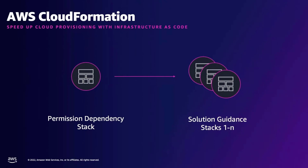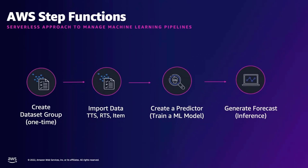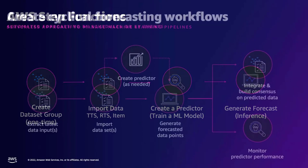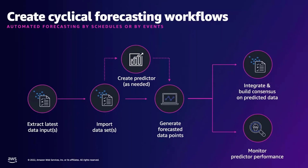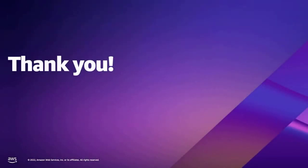To recap the demo: using AWS CloudFormation, we stood up a new solution guidance stack called Stack 1, which provisioned several step functions. We executed the dataset group as a one-time event. Then using the workflow step function, it retrieved our history, imported the data, created the predictor, and generated the forecast. This is the full cycle of forecasting workflows — from getting data where it lives at rest, to producing future data, viewing it in a BI tool, or integrating it back with your ERP system. Thank you very much for your attention today. If you have any questions, please let your account team or solution architect know.